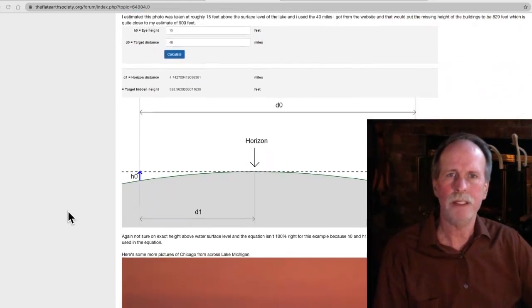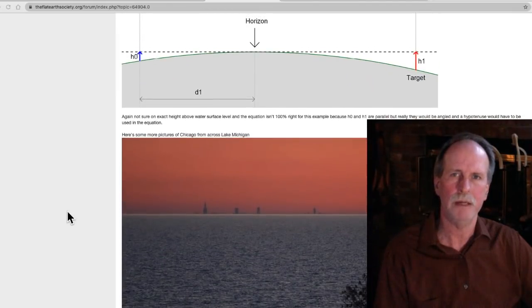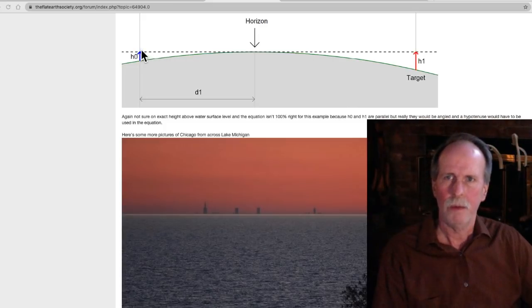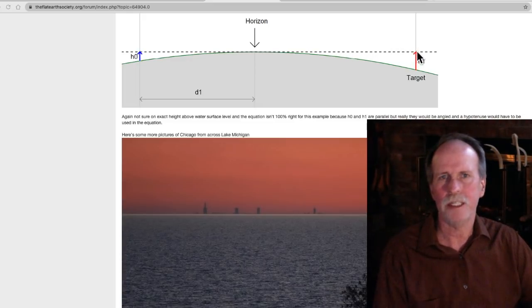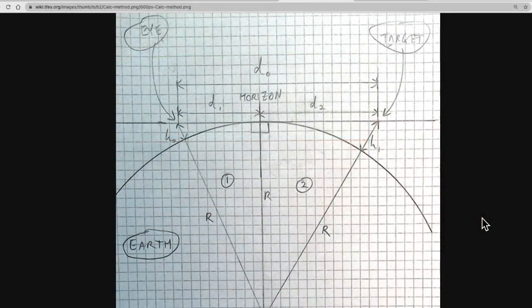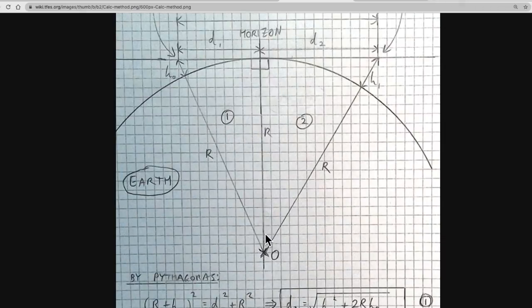And the way we do that is using something called the Earth Curve Calculator. We have the curve of the Earth. We have a known observer height. We draw a straight line across the curve of the Earth. And it intersects the distant building at a certain point. Everything above this line will be visible. Everything below it will be hidden. And the way that we do that is rather elegant. It's done after Pythagorean. And under this method, we form two right triangles.